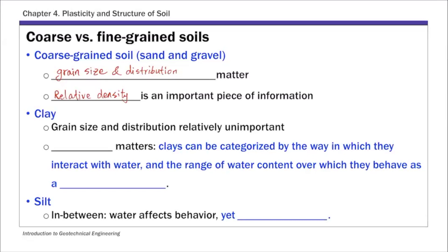For clays, this is a little bit different. Grain size and distribution are relatively unimportant. What's really important for clay is water — water matters in affecting the engineering behavior of clays. Clays can be categorized by the way in which they interact with water, and the range of water content over which they behave as a plastic material. Because clay particles are charged particles, they attract water molecules and form very tight bonds, which directly affects their engineering behavior. Silt, a fine-grained soil, is in between clays and sands and gravels — water affects its behavior, yet there's little or no plasticity.